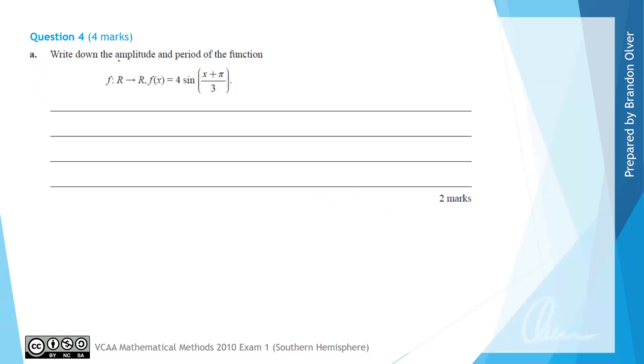For question 4a, we're asked to write down the amplitude and period of the function f with the rule 4 sine of x plus pi divided by 3. Before we go too far into this question, I'm just going to rewrite the rule as being 4 sine, and then this could be written as 1 third times x plus pi.